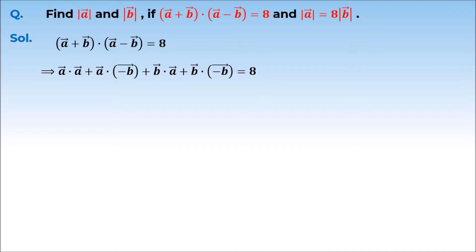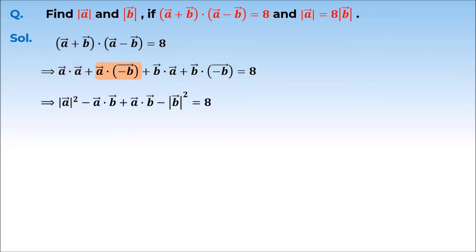By further simplifying it, we can expand this. A vector dot A vector gives magnitude of A vector squared. A vector dot minus B vector gives minus A vector dot B vector. B vector dot A vector equals A vector dot B vector. And B vector dot minus B vector gives minus magnitude of B vector squared.